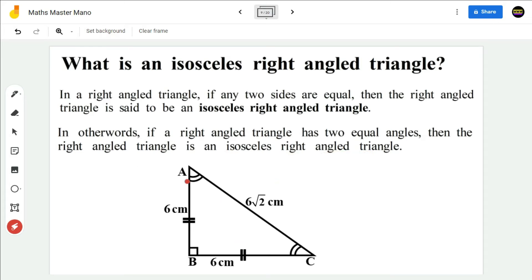From the diagram, in right-angled triangle ABC, the length of the sides AB and BC are equal, that is AB equal to 6 centimeter and BC equal to 6 centimeter.